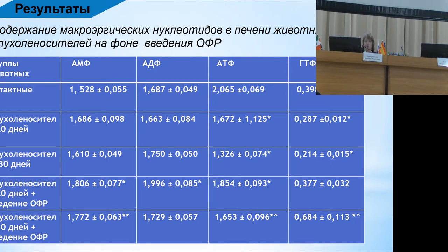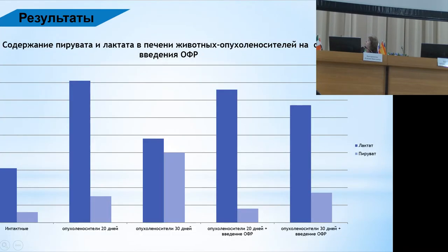Carbohydrate exchange processes are interfered with. Anaerobic processes begin: the oxidation of one glucose molecule leads to only two molecules of ATP instead of the expected yield, and you can see how the energy status is affected. This is confirmed by the increase in lactate in tumor-carrying animals.